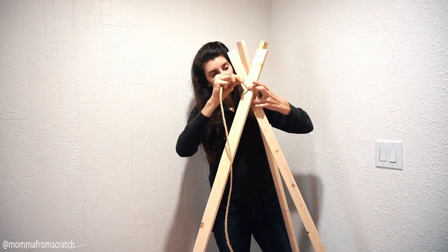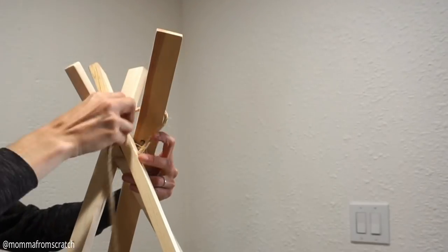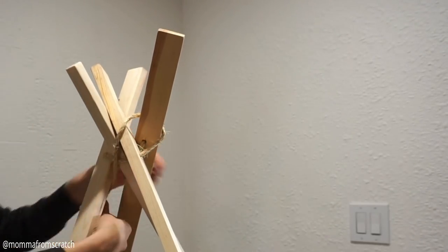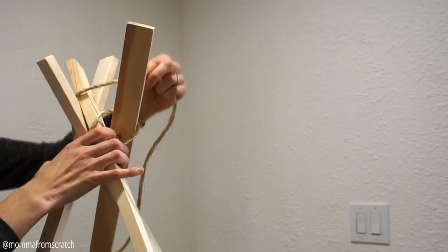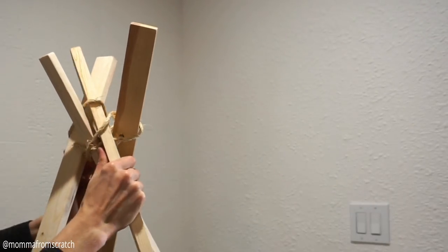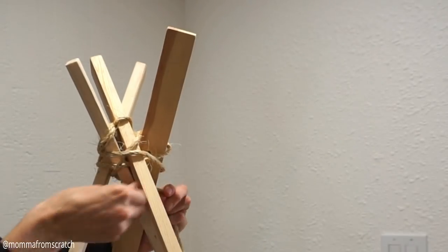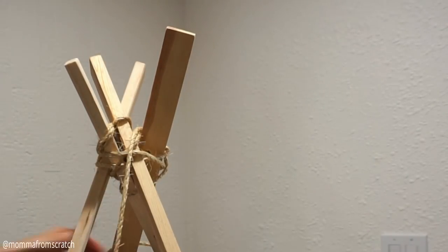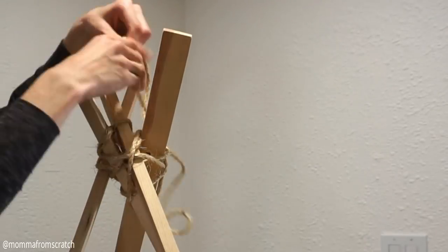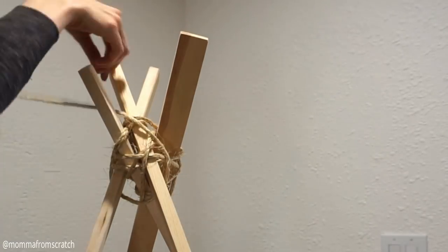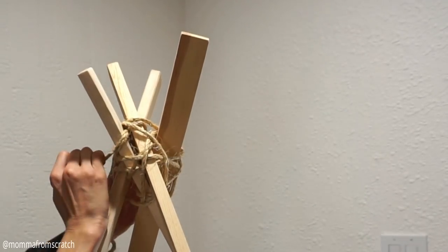This is when I went ahead and stood the boards all the way up, putting them in that teepee position. Then I just started wrapping my rope tightly around each individual board and securing that around, because if you just went all the way around the boards it would just kind of collapse on you. So you want to make sure that you're going in between each of the boards. There's no right or wrong way to do this.